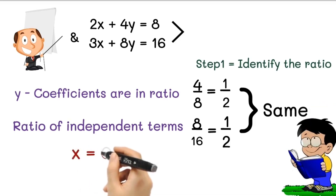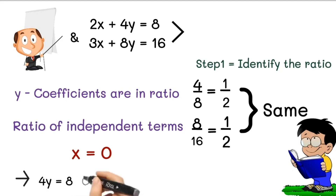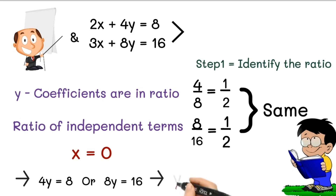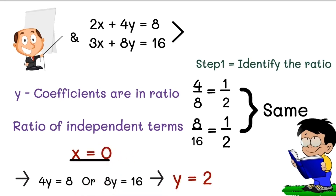You can see that the ratio of y coefficients is the same as the ratio of independent terms. So we can equate the other variable x to zero. If we put x equal to 0, we get 4y equals 8, or 8y equals 16, and hence y equals 2. This is the solution of the given system of linear equations.